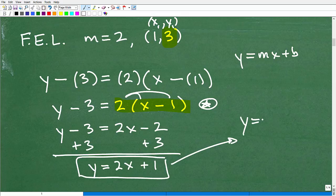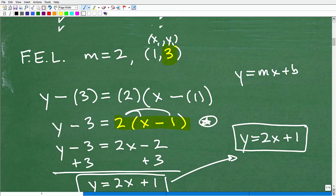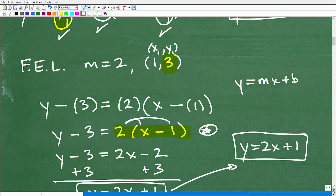Again, make sure you know how to use the distributive property. But what we're doing here really is solving for Y. We want this line in Y equals MX plus B form. So to solve for Y now, we're almost there. I simply just have to add 3 to both sides of the equation. And look right here, what we have, this goes away. I get Y equals 2X plus 1. And there you go.